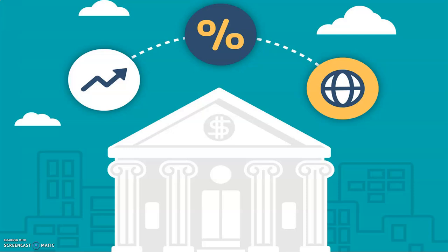A central bank is a financial institution given privileged control over the production and distribution of money and credit for a nation or even for a group of nations. In modern economies, the central bank is usually responsible for the formulation of monetary policy and the regulation of member banks. Although some central banks are nationalized, many central banks are not government agencies and are often described as being politically independent.